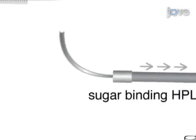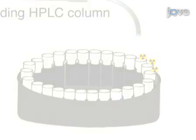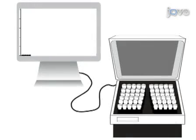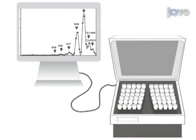The glycans are then separated by HPLC. The amount of each glycan form is determined by measuring the intensity of the radioactive signal in each eluted fraction.